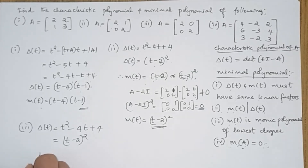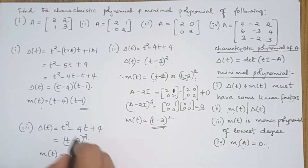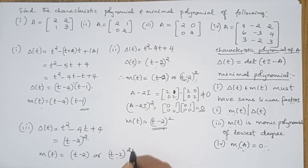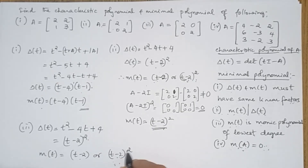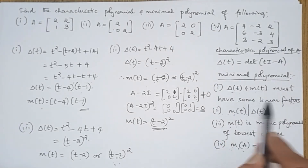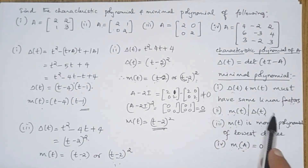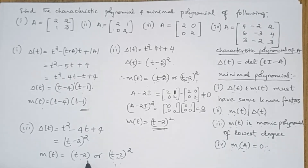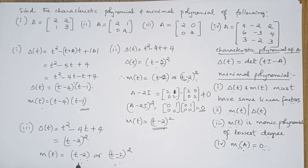Now notice what has changed. For M(T) again there are two options: the linear factor (T minus 2) must be present, and the other possibility is the quadratic factor (T minus 2)². Out of these two possibilities, check each condition: delta(T) and M(T) have the same linear factors — satisfied; M(T) divides delta(T) — both polynomials satisfy this; M(T) is the monic polynomial of lowest degree — (T minus 2) is of lowest degree. And the fourth condition is M(A) must equal 0.